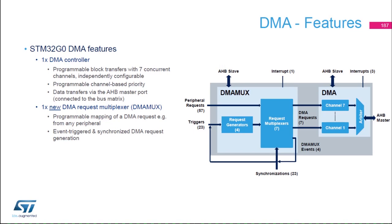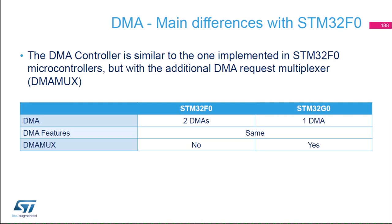Two units are in charge of handling DMA transfers: the DMA request multiplexer (DMA-MUX) and the DMA controller. The DMA controller transfers data from a source address to a destination address and manages priority between channels. The DMA-MUX enables the user to map requests to channels. Comparing to the STM32 F0, the main difference is that the F0 has two different DMAs, whereas the G0 has one DMA.